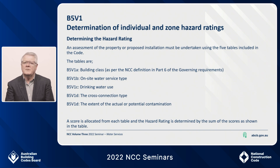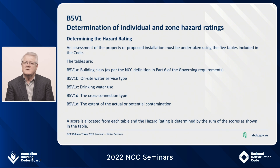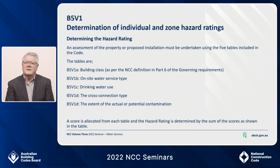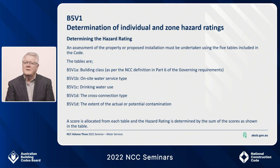It is an easy-to-follow five-step process for determining the hazard rating for individual and zone protection. The five areas are: building class as per the NCC definition in Part 6 of the governing requirements; on-site water service type; drinking water use; the cross connection type; and the extent of the actual or potential contamination. Each area provides a score or numerical value. Scores are allocated and summed to provide a total score: 0–3 no hazard, 4–7 low hazard, 8–10 medium hazard, and above 11 high hazard. Importantly, the verification method is not intended to enable any lowering of hazard ratings already prescribed in Specification 41.